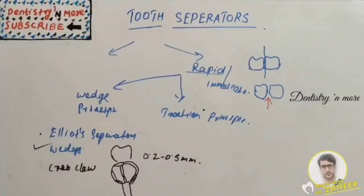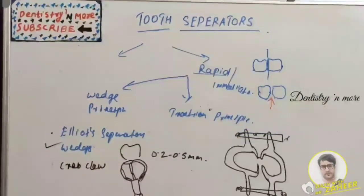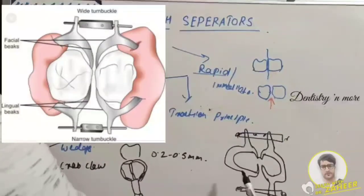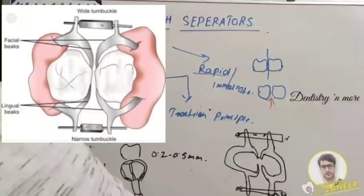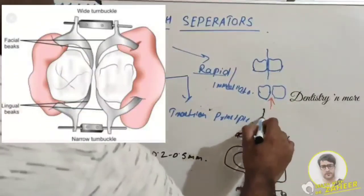Now let's move on to the traction principle. In traction principle, this is a traction principle working device, that is Ferrier's double bow separators.